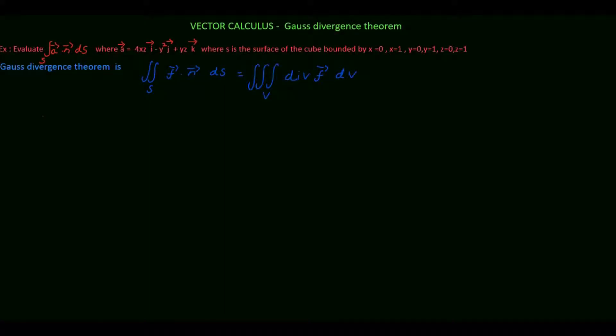In this tutorial, we will see how to apply Gauss Divergence Theorem to compute the surface integral of a given vector. We have to calculate the surface integral of A vector dot N vector into dS. From Gauss Divergence Theorem, we can write this surface integral is equal to the volume integral of divergence of A vector into dV.